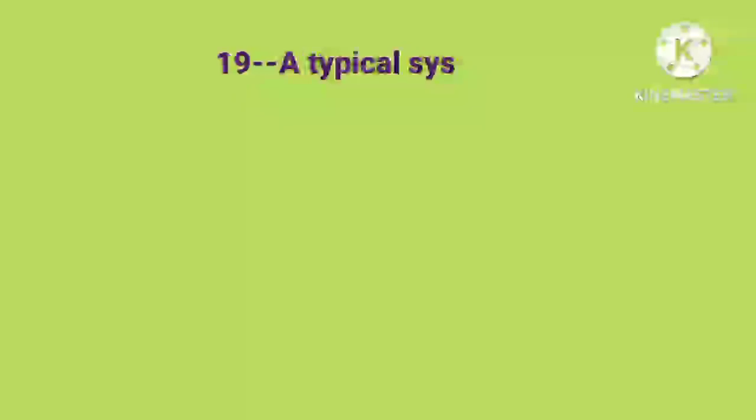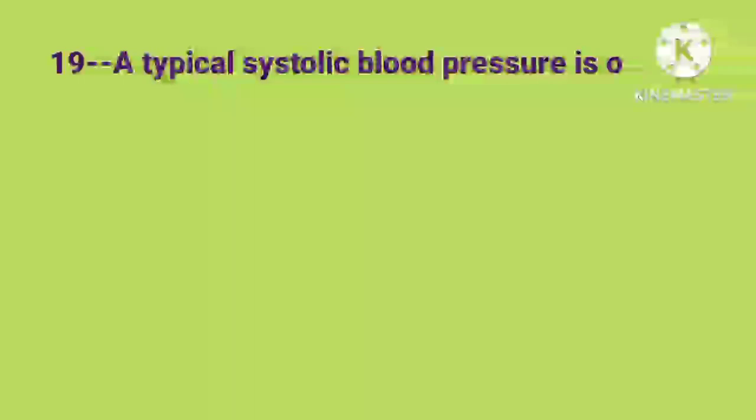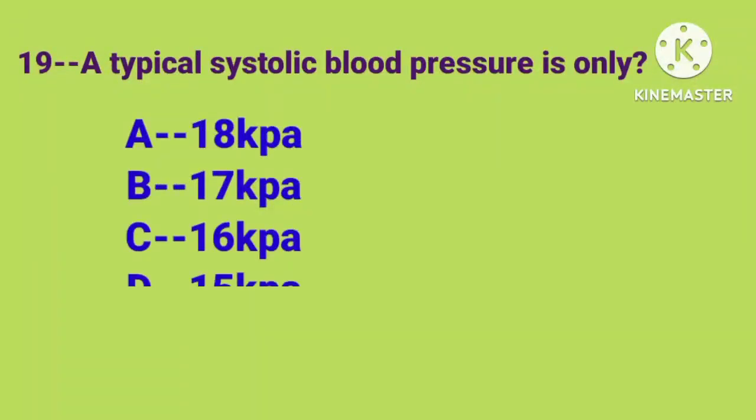Question number 19. A typical systolic blood pressure is only. Correct answer is option C, 16 KPA.